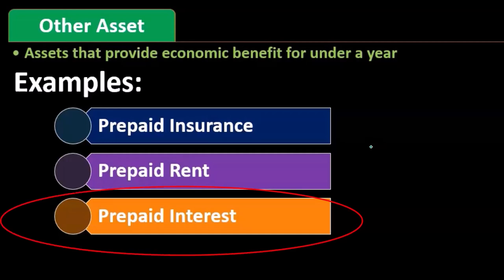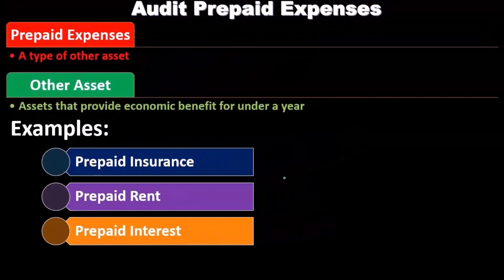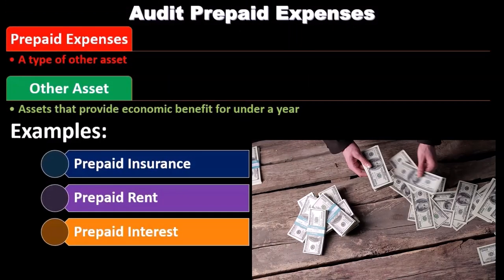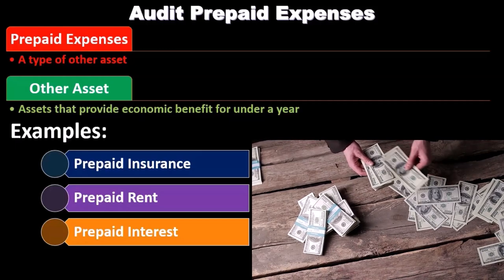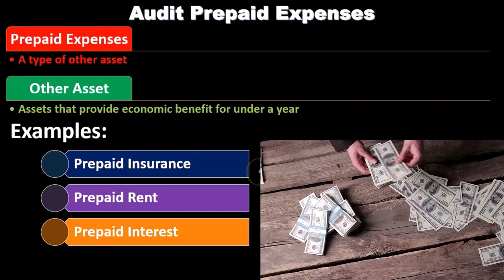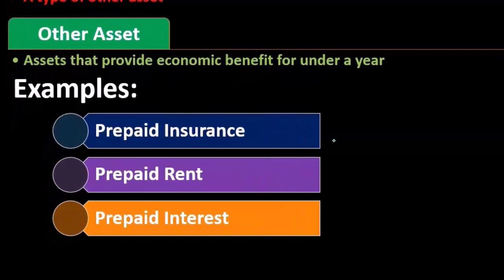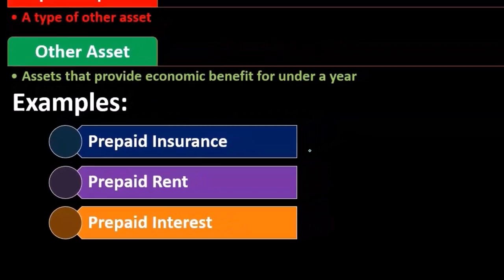Anything we decide we're going to pay before we get the goods or services falls under prepaids. Typically we try not to do that because most of the time a company will want to pay after, because of the time value of money — delay the payment as much as possible. The place where we cannot typically do that is prepaid insurance, and there might be negotiation or agreement formats that lead us to prepay rent or some other type of expense.